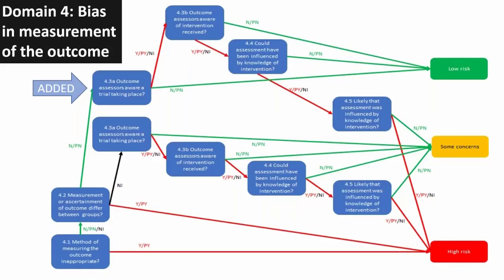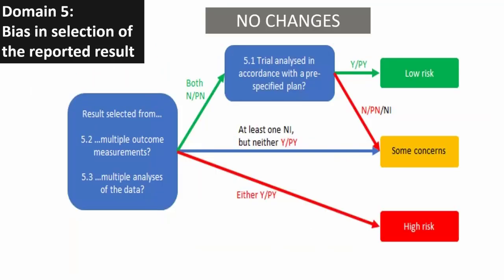For domain four — bias in measurement of the outcome — we've added one question that looks a bit odd at first sight: 'Are the outcome assessors aware that a trial is taking place?' This is added specifically for trials where the outcome assessors are the patients themselves, there are no researchers involved in the outcome assessment, and those patients are not aware they're in a trial. In domain five — bias in selection of the reported results — we've made absolutely no change at all.